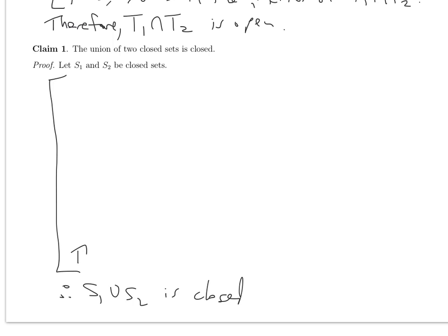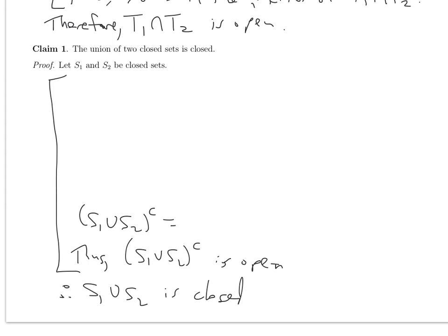If the next-to-last line is that (S1 union S2) complement is open, then my last line — that the union is closed — makes sense. The reason for thinking about it in terms of open sets is that (S1 union S2) complement, according to DeMorgan's laws, is just the complement of S1 intersect the complement of S2. Working our way back up: we know S1 and S2 are closed, so we know their complements are open — that's what closed means.